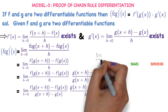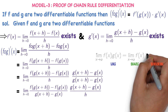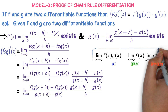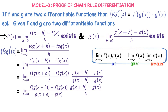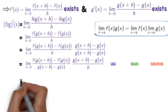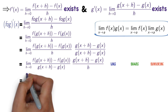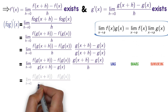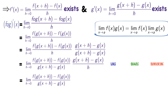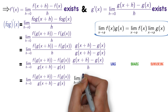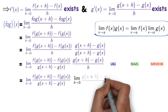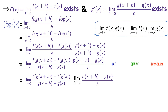From the limits chapter, we have the formula: limit x→a of [f(x)·g(x)] = limit x→a f(x) · limit x→a g(x). Applying this formula here, we split into: limit h→0 of [f(g(x+h)) − f(g(x))] / [g(x+h) − g(x)] multiplied by limit h→0 of [g(x+h) − g(x)] / h.